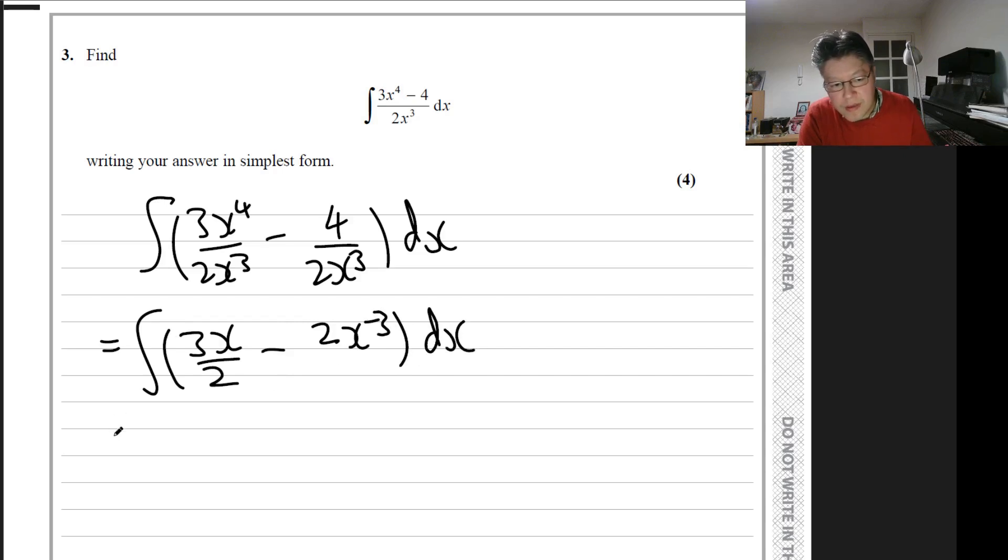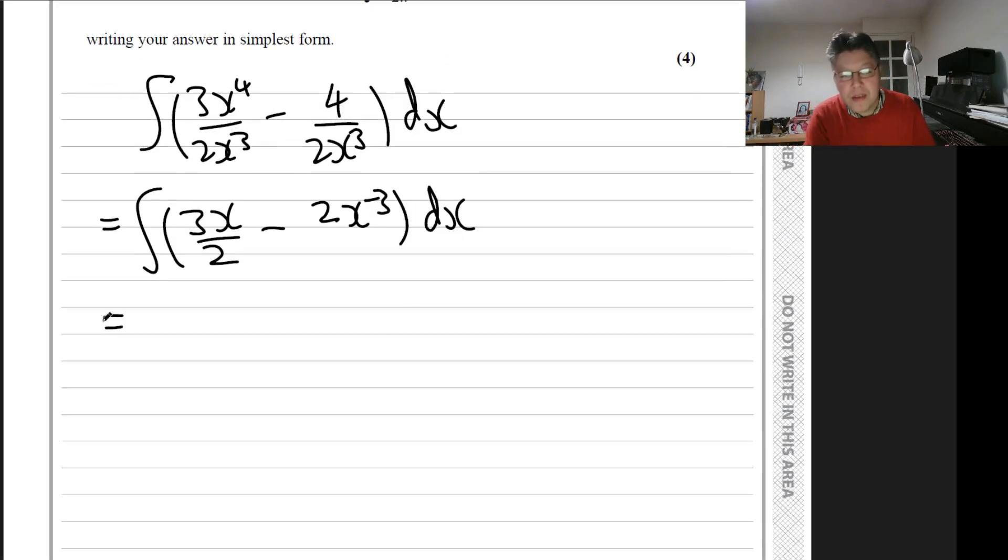And now we're ready for integration. So this becomes 3x squared - that 1 becomes a 2 - over 2 times 2,